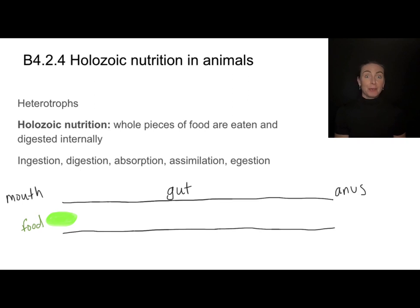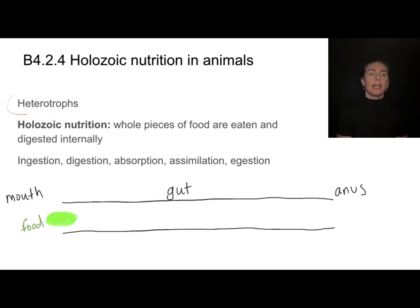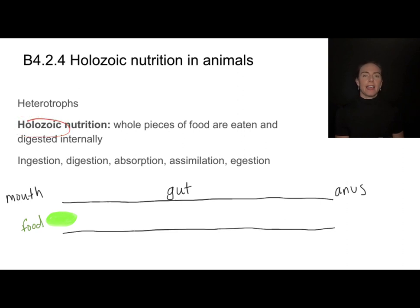Unlike autotrophs that can produce their own food, heterotrophs are organisms that must eat their food — they are consumers, not producers. All animals are heterotrophs, and most of them have what we call holozoic nutrition, which means that whole pieces of food are eaten and digested internally.